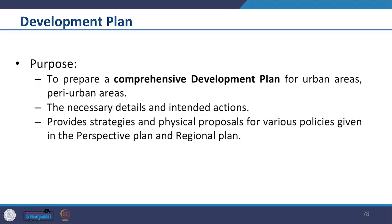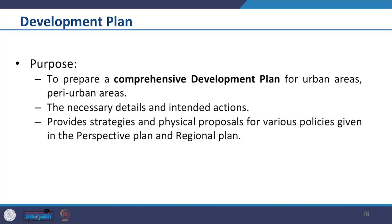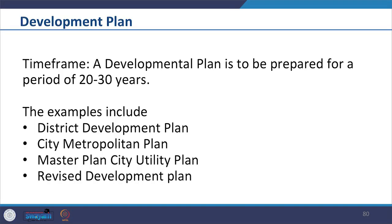Now let us look at the development plan. The development plan is a statutory plan prepared under a relevant act within the framework of an approved perspective plan. The purpose of a development plan is to prepare a comprehensive development plan for urban areas and peri-urban areas under the control of a development authority or metropolitan planning committee. It provides necessary details and intended actions in the form of strategies and physical proposals for various policies given in the perspective plan and regional plan. A development plan is prepared for a period of 20 to 30 years. Examples include district development plan, city metropolitan plan, master plan, city utility plan and revised development plan.